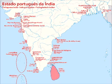Goa was their prized possession and the seat of Portugal's viceroy. Portugal's northern province included settlements at Daman, Diu, Chaul, Baçaim, Salcete, and Mumbai. The rest of the northern province, with the exception of Daman and Diu, was lost to the Maratha Empire in the early 18th century.